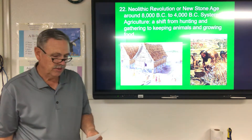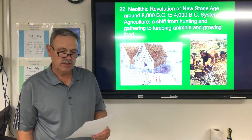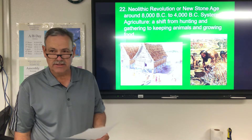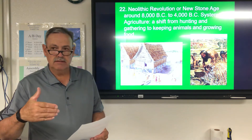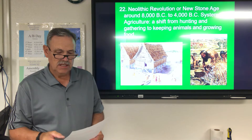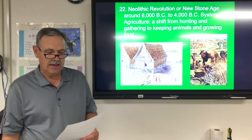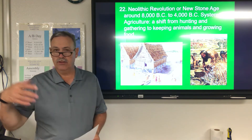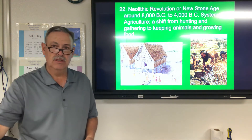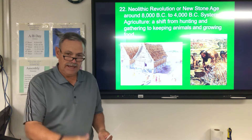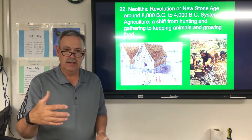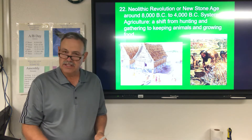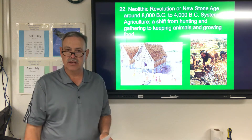Then we move on to the Neolithic Revolution, or New Stone Age, around 8,000 B.C. to 4,000 B.C. This is where they definitely begin systematic agriculture — a shift from hunting and gathering to keeping animals and growing their own food. They didn't have to look for food as they traveled; they could plant it themselves, harvest the crops, and had developed a knowledge of putting seeds in the ground and getting food from it.